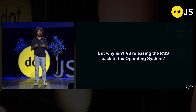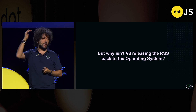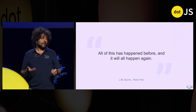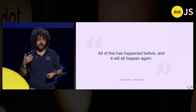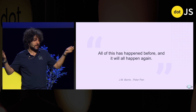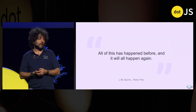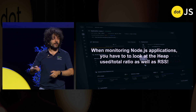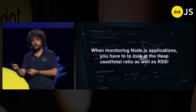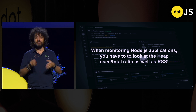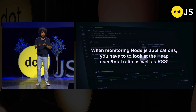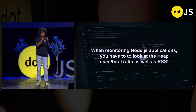Very often, memory is not even released — it keeps a very high RSS (resident size set). Why? Because all of this has happened before and will happen again. If it thinks it's going to allocate more data, it's not releasing memory to the operating system — it keeps it around because it will need it again. What's most important when monitoring a Node.js application is to look at the heap-used-to-total ratio as well as RSS. Heap used and total tell us how much is actually being used in the app.